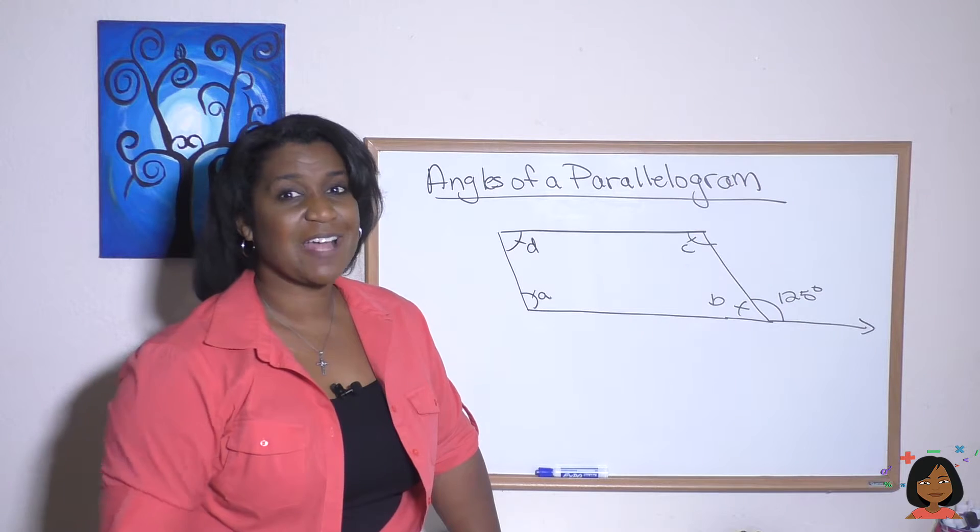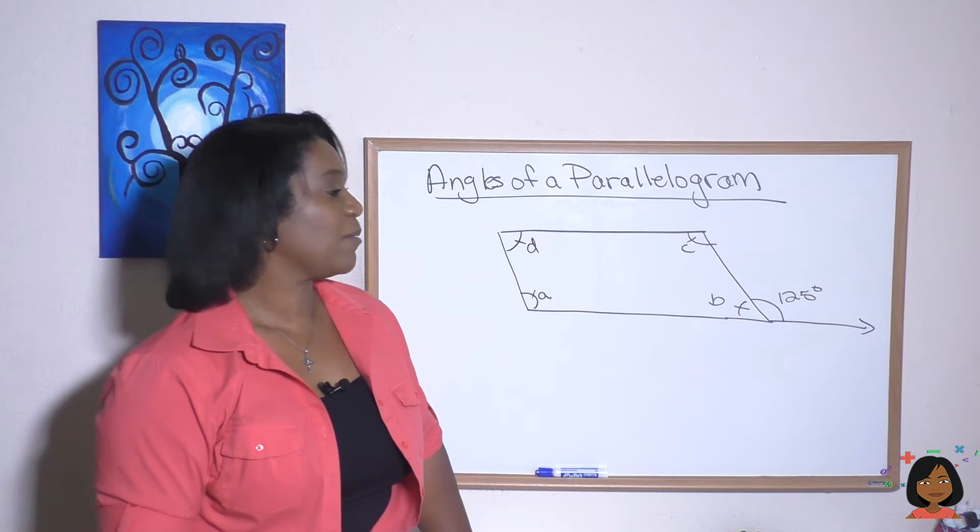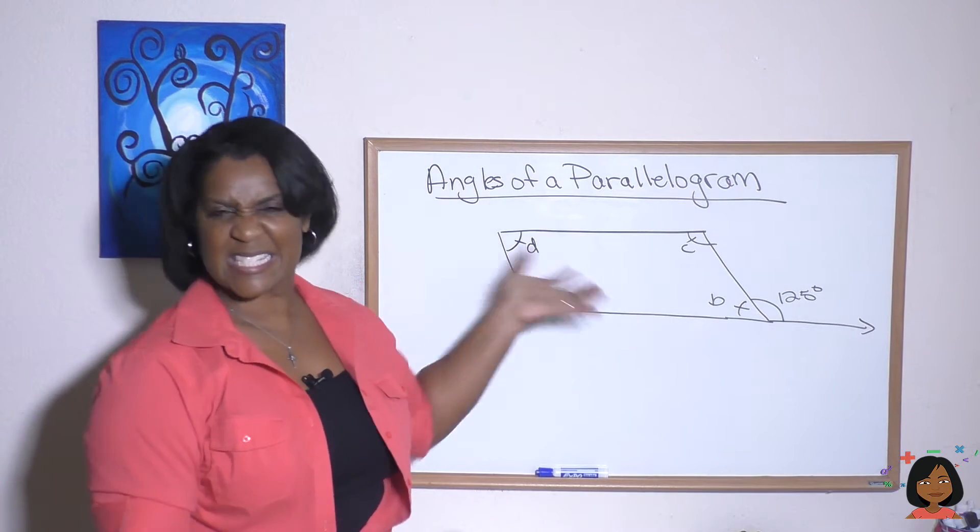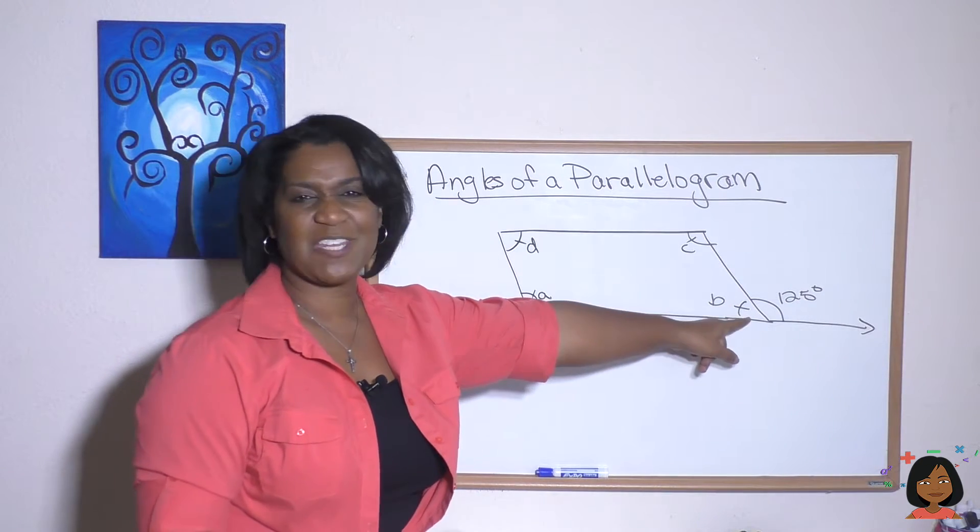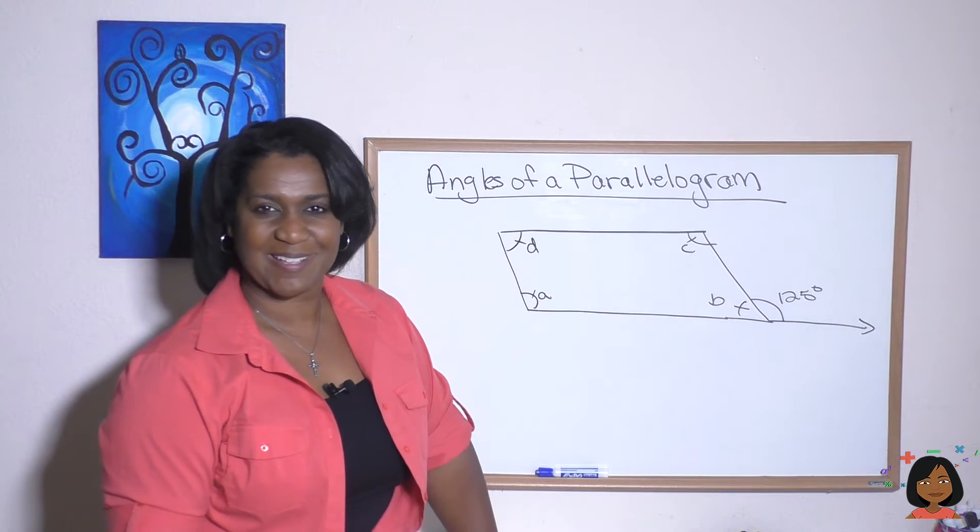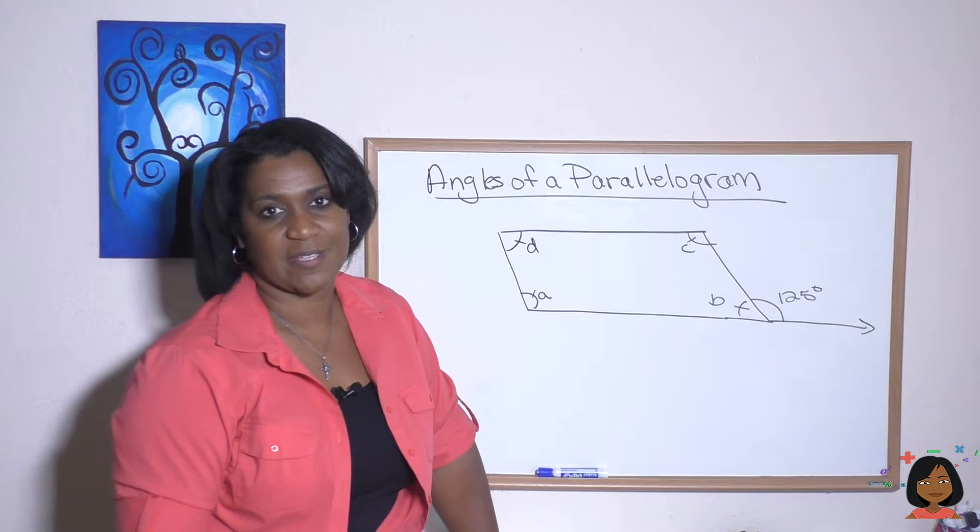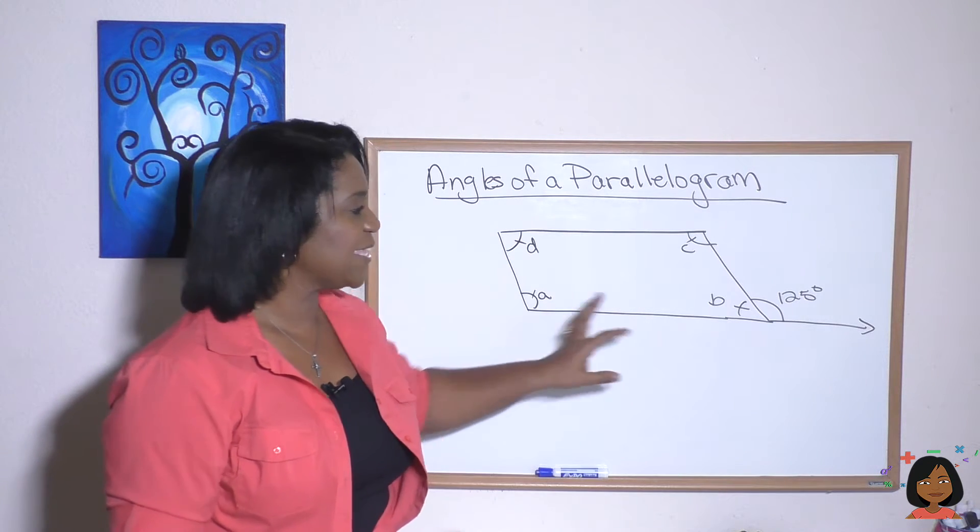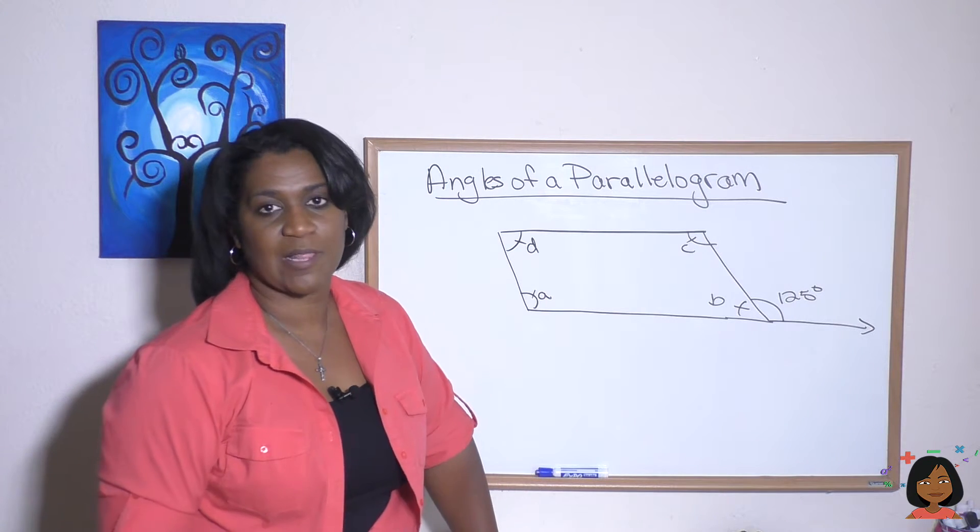Take a look at another example. So this time, we have a parallelogram, but instead of giving us an angle inside of the parallelogram, I've given you an angle on the outside of the parallelogram. It's 125 degrees. How does that help us find the angles inside of the parallelogram?